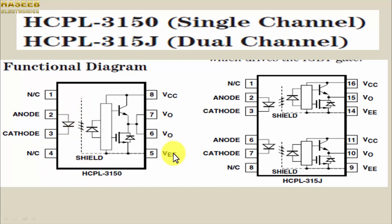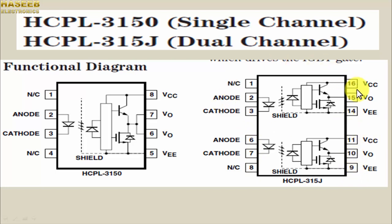There are two different packages: HCPL-3150 is an 8-pin IC, and HCPL-315J is a 16-pin IC. In the 16-pin package, pins 1, 2, 3, 4, 5, 6, 7, 8, 9, 10, 11, 12, and 13 — certain pins are not connected, and its footprint is 16-pin. For the internal structure, whether single or dual channel, there is an LED and a photodiode. The optical beam generated by the LED reaches the photodiode, which conducts and gives a switching pulse to the internal chip block.